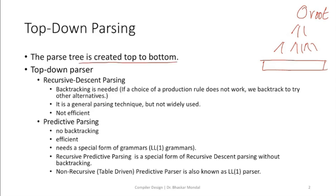The parse tree is created top to bottom. Until now, we have been generating parse trees without any algorithm — we were doing it based on intuition. We were looking at the given input stream and also at the set of grammar production rules, and based on that, we were deciding which derivation to take and forming a parse tree. But a computer can't do anything based on intuition — a computer works in a deterministic way, meaning a deterministic algorithm must be present.